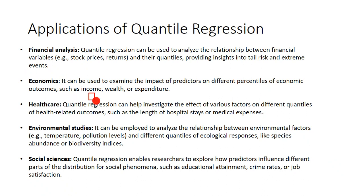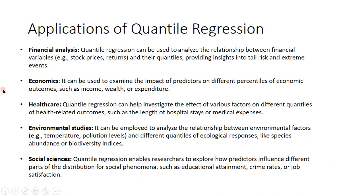In economics, income versus expenditure is a classic example — more income means more expenditure. In healthcare, metrics like length of hospital stays or medical expenses become more imbalanced the longer you stay, so the distribution is not normal. Environmental studies like ecological responses, species abundance, and biodiversity indices are other use cases. Social sciences such as educational attainment, crime rates by region, or employee job satisfaction — predicting the area where employees are unsatisfied — are also good applications.